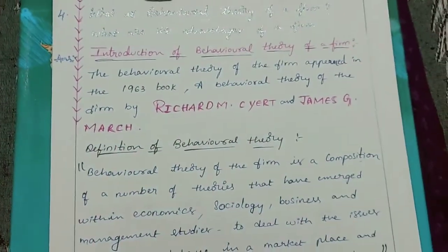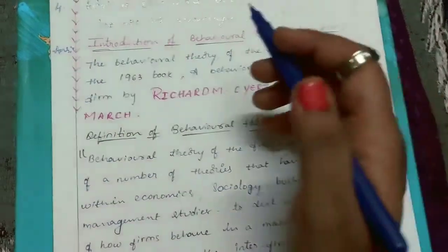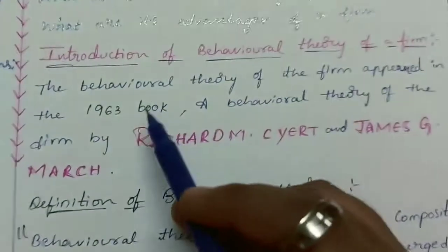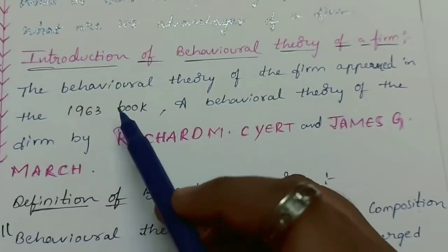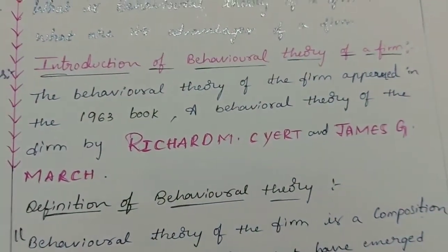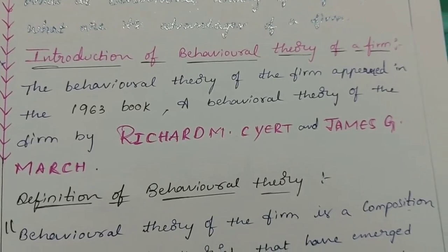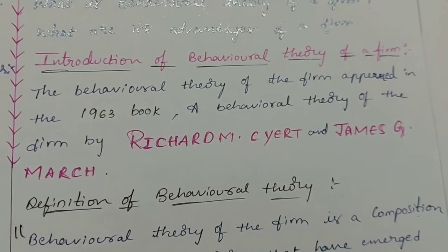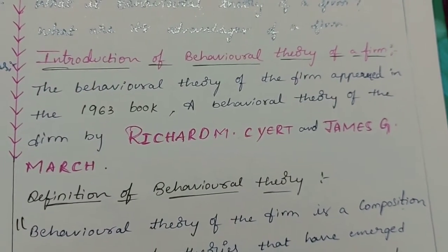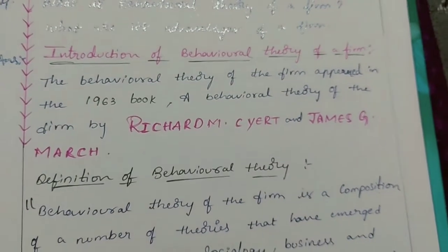Introduction of behavioral theory of a firm. The behavioral theory of the firm appeared in the 1963 book 'A Behavioral Theory of the Firm' by Richard M. Cyert and James G. March.